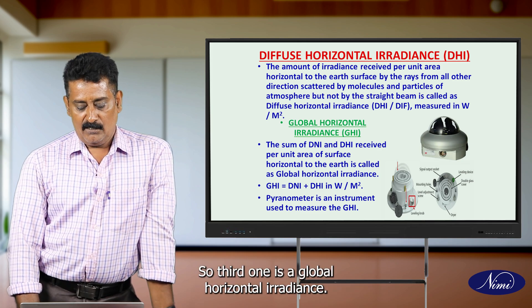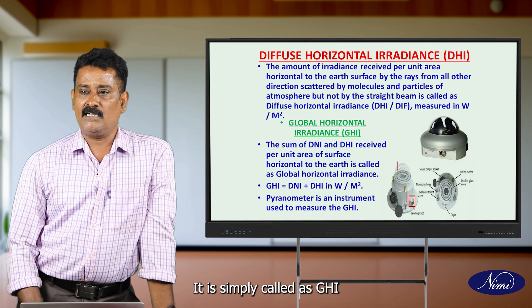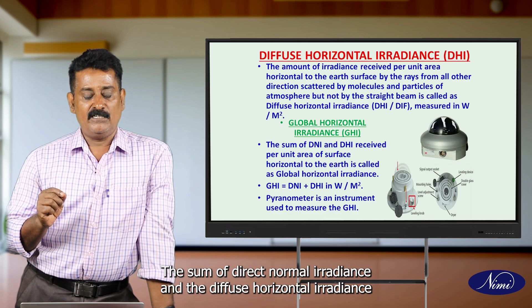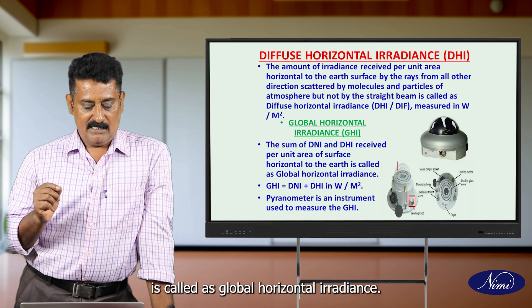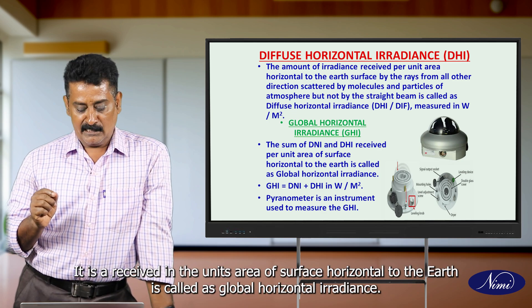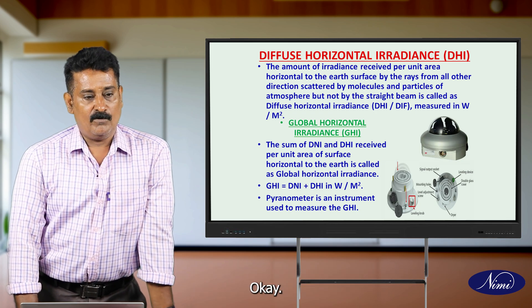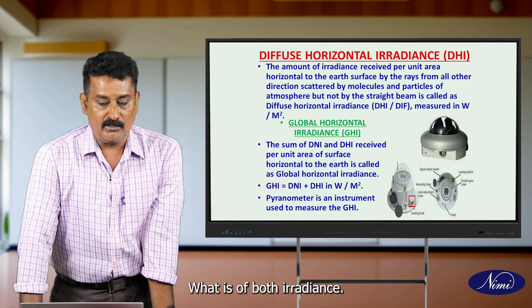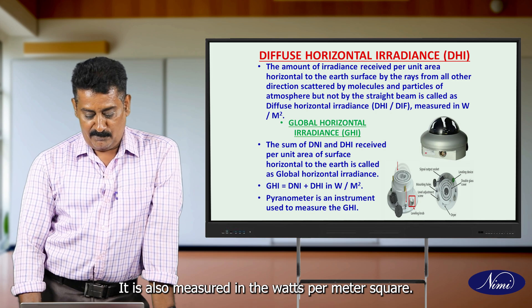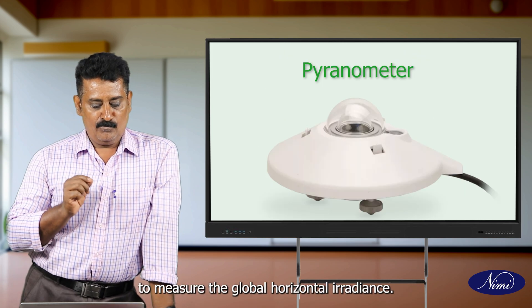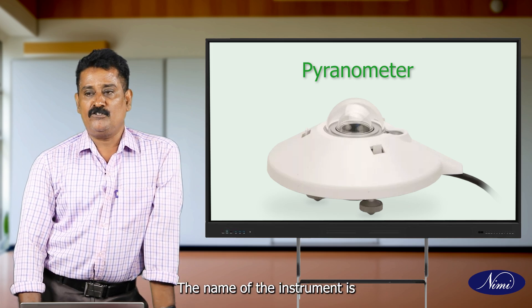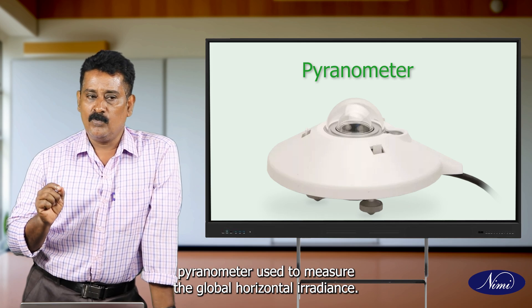The third one is global horizontal irradiance, simply called GHI. The sum of direct normal irradiance and diffuse horizontal irradiance is called global horizontal irradiance. It is also measured in watts per meter square. There is one instrument used to measure the global horizontal irradiance — the name of that instrument is pyranometer.